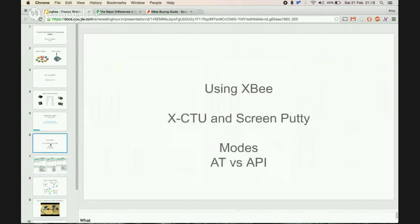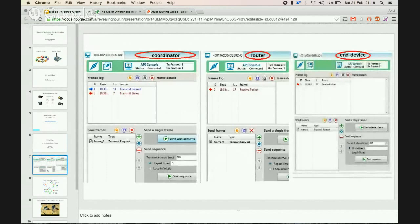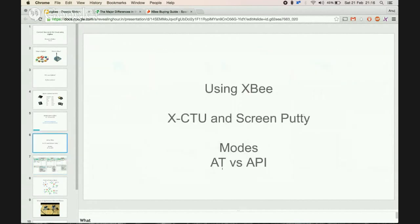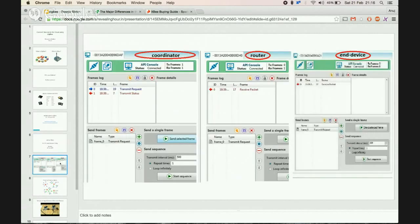I wanted to talk about AT mode versus API mode, and I have a screenshot here which will help us understand the difference. For those familiar with TCP and UDP packets, I can relate AT and API with that—AT could be considered as a UDP packet and API is more of a TCP connection. I have a screenshot where I configured one device to be a coordinator, another to be a router, and the last one as the end device.